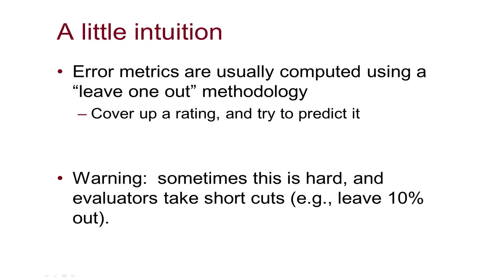I would go through a set of ratings — maybe all of them, maybe just a set of a certain size — and say, if I didn't have this rating in the system, let's take it out and ask the system to predict what that user would think of this item and see how close we are. Off by 0.3? That's not bad. Let's do that with another item and another. For many algorithms this is hard, so evaluations often work with shortcuts — taking 10% out, predicting that 10%, then repeating to get confidence.